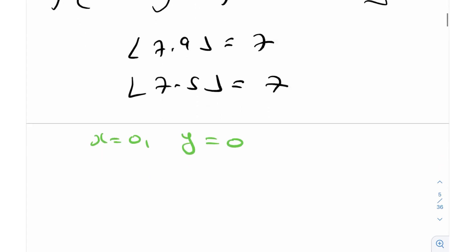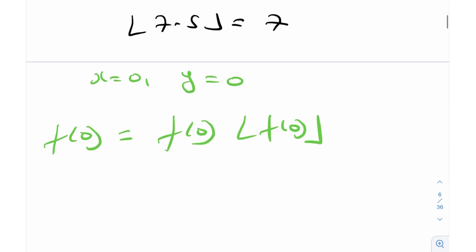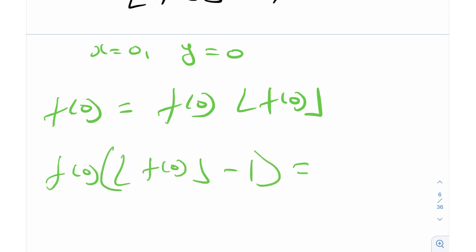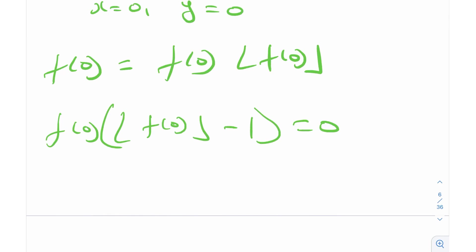When I substitute x=0, y=0, I get f(0) is equal to f(0) times floor(f(0)). I can take f(0) as a common factor, leaving floor(f(0)) minus 1, and that equals 0. So we can divide this into two cases: Case 1 is where floor(f(0)) equals 1, and Case 2 is when f(0) equals 0.